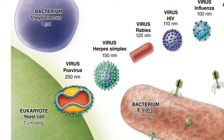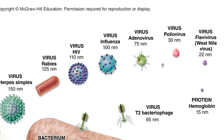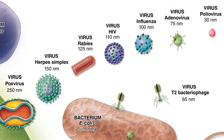The maximum size of viruses observed is the poxvirus at about 250 nanometers. The smallest virus observed is the flavivirus, commonly called the Vesni virus, at 22 nanometers. To give you an idea of how small viruses can be, one molecule of hemoglobin is about 15 nanometers in size.